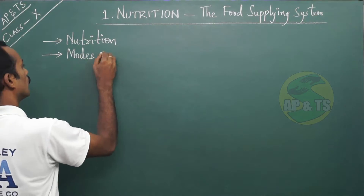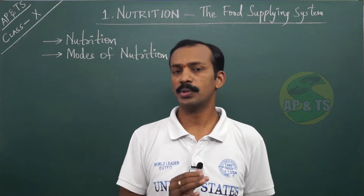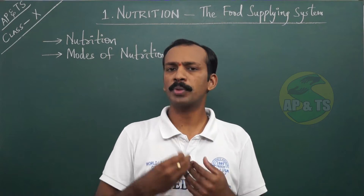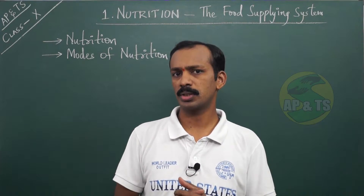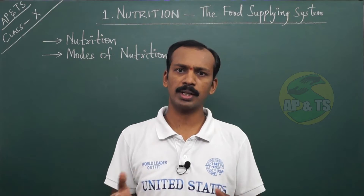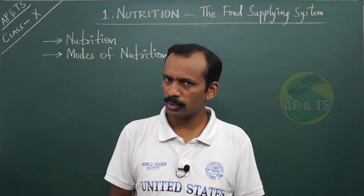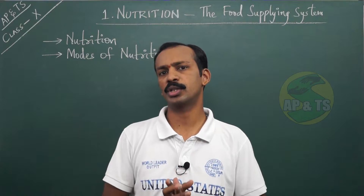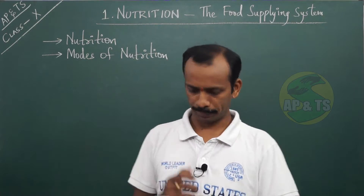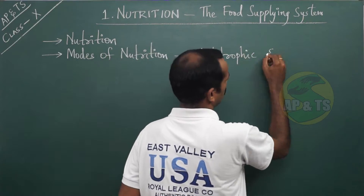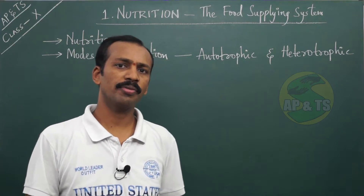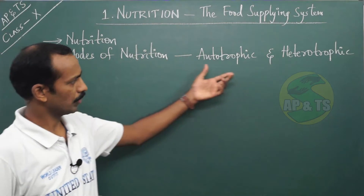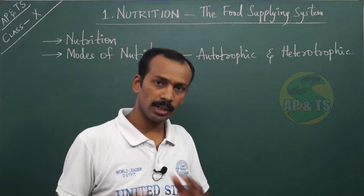Now let us see the modes of nutrition. Nutrition is the process by which living organisms obtain food, but the way they obtain food is different in different types of organisms. All organisms do not take food in the same manner. Broadly, nutrition is classified into two types: autotrophic and heterotrophic nutrition.